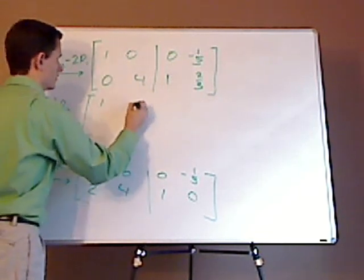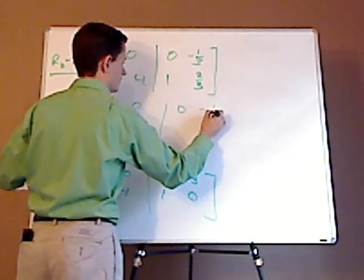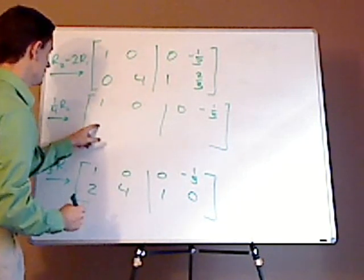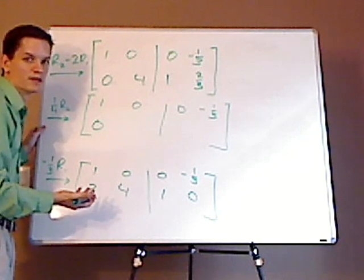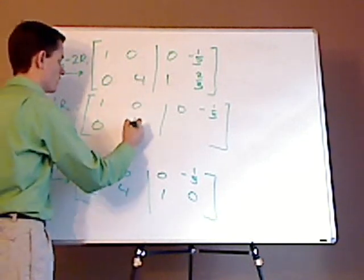So, this is one, zero, zero, negative one-third. And then this, right here, is just zero, because I'm just timesing it by one-fourth. One-fourth times four is one.